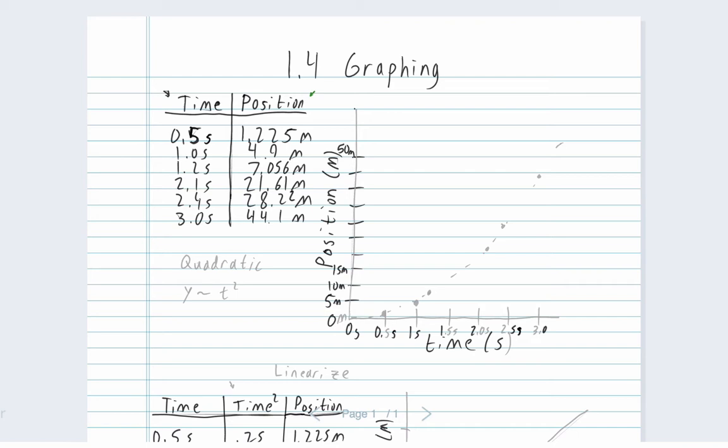So we got 0.5 seconds at 1.225 meters. So we go to our graph 0.5 seconds. 1.225 meters is going to be pretty small so I'll just draw a point right there. At one second we're at 4.9 meters which is right about here. At 1.2 seconds we're at 7.056 so that's about right here.